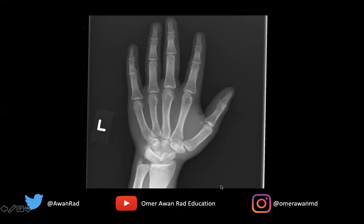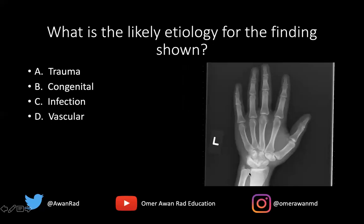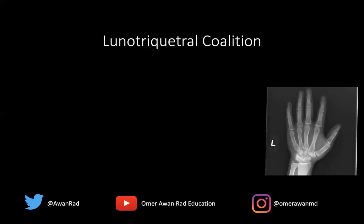The question is: what is the likely etiology for this finding? Is this lunotriquetral coalition from trauma, is it congenital, from infection, or from vascular causes? The vast majority of lunotriquetral coalitions tend to be congenital. This is probably the most common carpal coalition that we see.